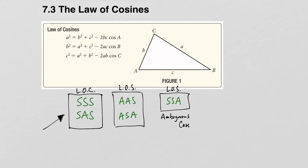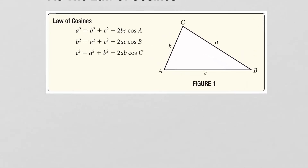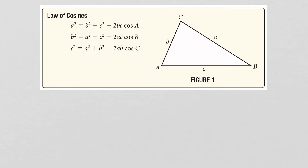Let's take a look at the law of cosines formula. The formulas are kind of complicated — more complicated than the law of sines formula. One of the formulas says that a squared is equal to b squared plus c squared, minus two times b times c times the cosine of A. The other two formulas are exactly similar to this formula, just with the variables switched around.